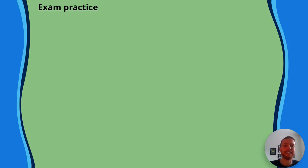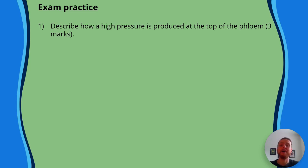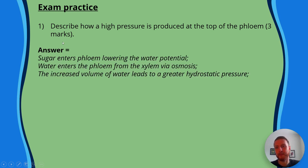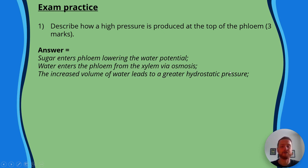Exam practice question one: describe how a high pressure is produced at the top of the phloem — worth three marks. Answer: sugar enters the phloem, lowering the water potential; water enters the phloem from the xylem via osmosis; and the increased volume of water leads to a greater hydrostatic pressure.